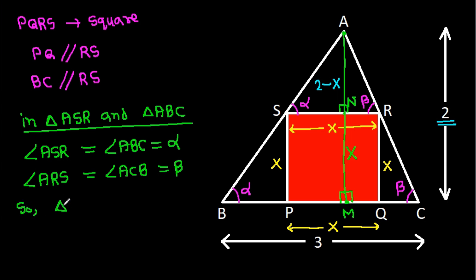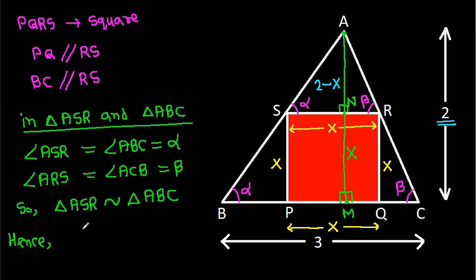So triangle ASR is similar to triangle ABC. Hence, the ratio of base SR to BC will be equal to the ratio of height AN to AM.